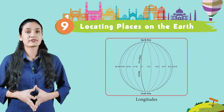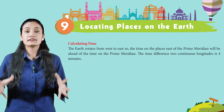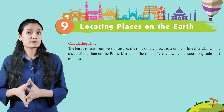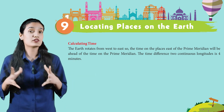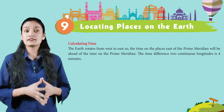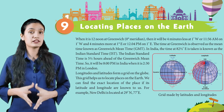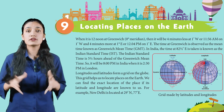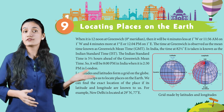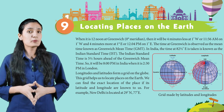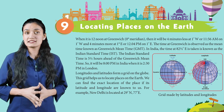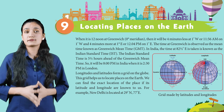Now, calculating time. The Earth rotates from west to east, so the time on places east of the Prime Meridian will be ahead of the time on the Prime Meridian. The time difference between two continuous longitudes is four minutes. When it is 12 noon at Greenwich (0 degrees meridian), it will be four minutes less at 1 degree West, that is 11:56 AM, and four minutes more at 1 degree East, that is 12:04 PM.